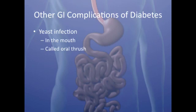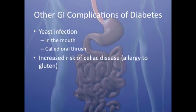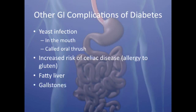Some other complications of poorly controlled diabetes are yeast infections in the throat and mouth, which are referred to as oral thrush. Diabetics also have an increased risk of celiac disease, which is an allergy to gluten. Finally, diabetics are at increased risk for fatty liver and gallstones.